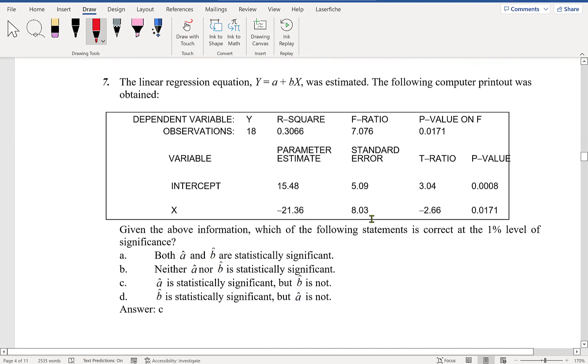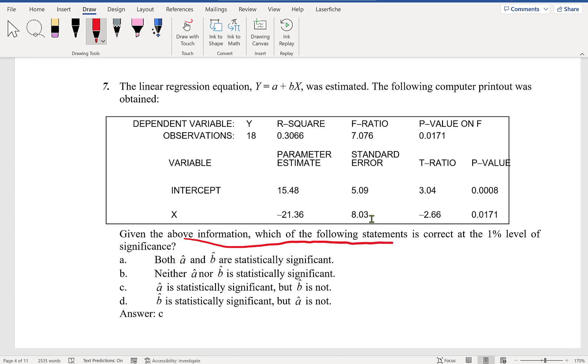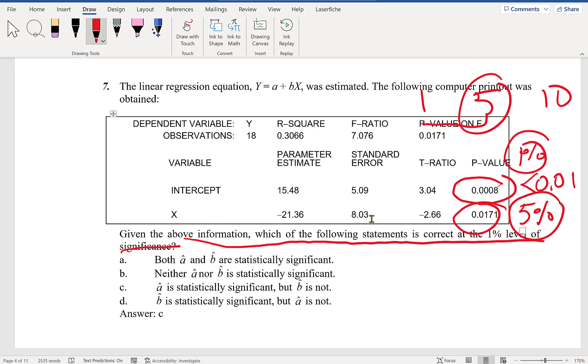Let's take a look at question 7. Given the information, which of the following is correct at the 1% level of significance? The p-value here is 0.0008, which is less than 0.01. This is statistically significant at 1%. This number is 1.7%, so statistically significant at the next highest level, 5%. Therefore, a-hat is statistically significant, but b-hat is not. The correct answer is C.